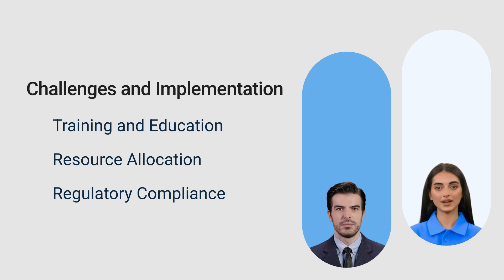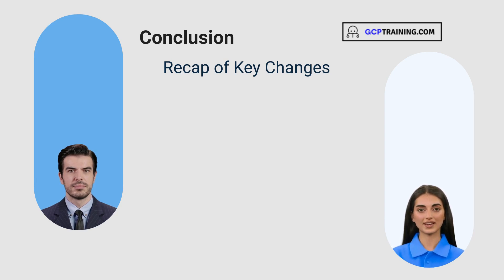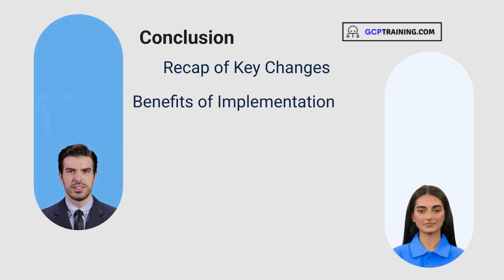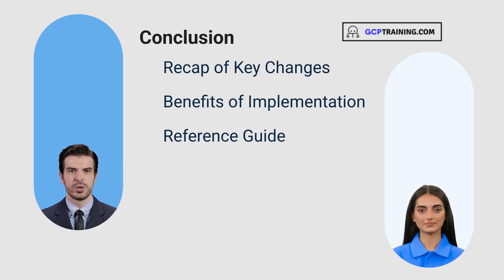Finally, let's summarize the key changes and the benefits of implementing the new guidelines. To recap, the E6 R3 guidelines introduce significant changes in structure, guiding principles, technology integration, quality management, ethical considerations, and stakeholder responsibilities. These changes are designed to enhance the quality, reliability, and ethical standards of clinical trials, ensuring better outcomes for all stakeholders involved. Implementing these guidelines will bring numerous benefits, including improved data quality, streamlined processes, and enhanced participant safety. Additionally, we've prepared a reference guide summarizing these changes, which will be available for all course takers. This will be a great resource to refer back to as you implement the new guidelines. We encourage all stakeholders to embrace these changes and work together to ensure successful implementation. Continuous education, collaboration, and adherence to these guidelines will be key to our success.